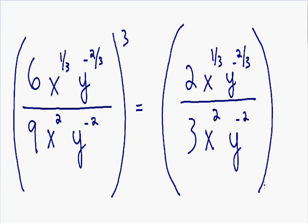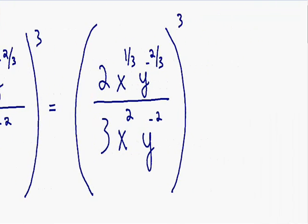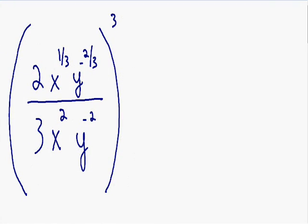On the outside of the parentheses we have a 3 exponent on top. The next thing I want to do is get rid of the parentheses and get rid of this 3 exponent that is on top of the parentheses.